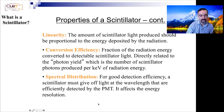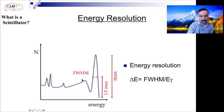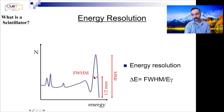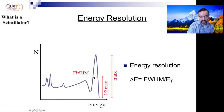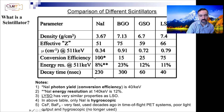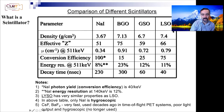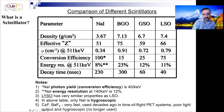Looking at energy resolution: imagine this is 140 keV for technetium. Ideally you want the energy resolution to be very good — a very small full width at half maximum (FWHM), which can also be expressed as a percentage. We'll talk about this more, but let's look at some examples of different scintillators.